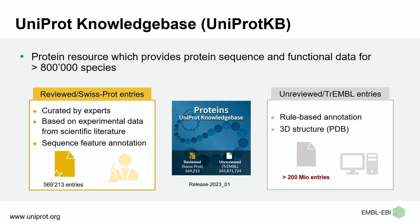UniProt is a protein resource which provides protein sequence and functional data for more than 8,000 species. Our main resource is the UniProt Knowledge Base, or UniProtKB, which is composed of two parts. The first section contains all the reviewed SwissProt entries — curated by experts with information based on experimental data from the scientific literature. We also provide sequence feature annotation, and at the current release, we have about half a million protein entries in this section.